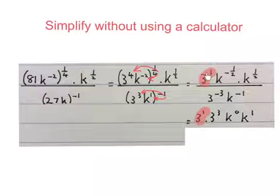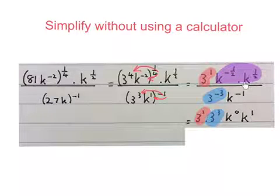Next to simplify I write that 3 to the 1 down bring this 3 to the minus 3 up it becomes 3 to the power of 3 then that k to the minus 1 half times k to the half I add the minus 1 half and 1 half then I get k to the power of 0.